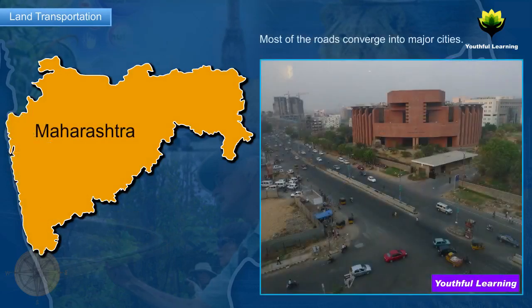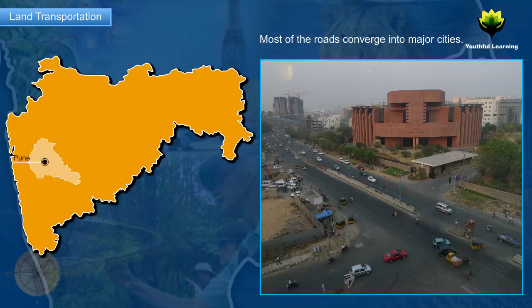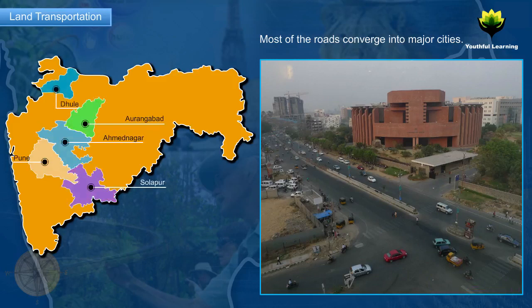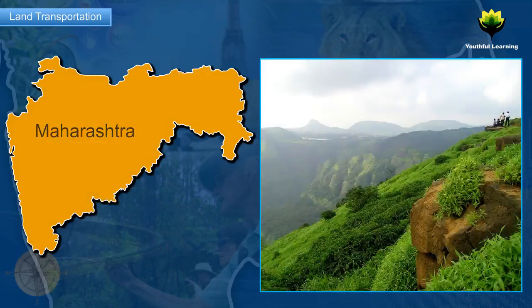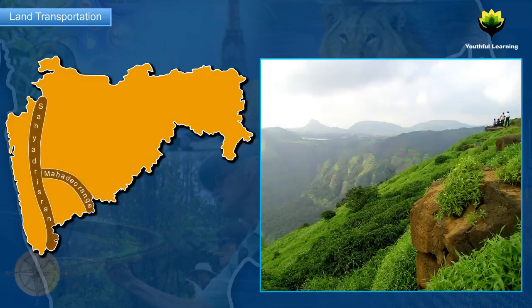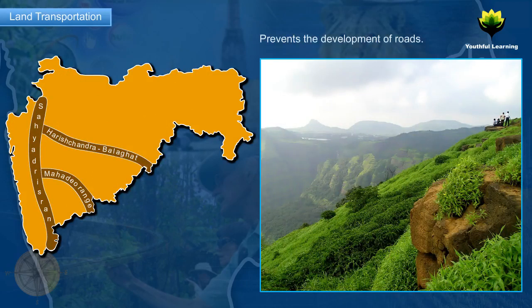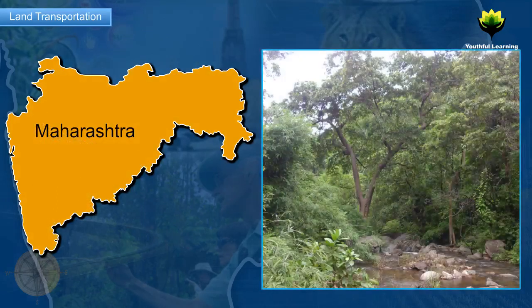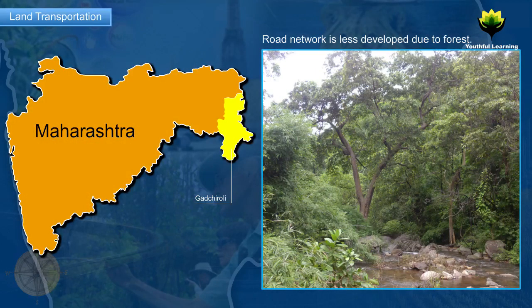Most of the roads converge into major cities such as Pune, Ahmednagar, Aurangabad, Solapur, Dhule and Nagpur. The hilly terrain of the Sahyadris, Mahadev Hills, Harish Chandra and Balaghat ranges prevents the development of roads. Due to the extensive forest cover in Gadchiroli, the road network there is less developed.